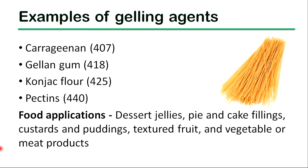Carrageenan, gellan gum, konjac flour, and pectins are some examples of gelling agents. Gelling agents are important in foods such as dessert jellies, pie and cake fillings, custards and puddings, textured foods, and vegetable or meat products.